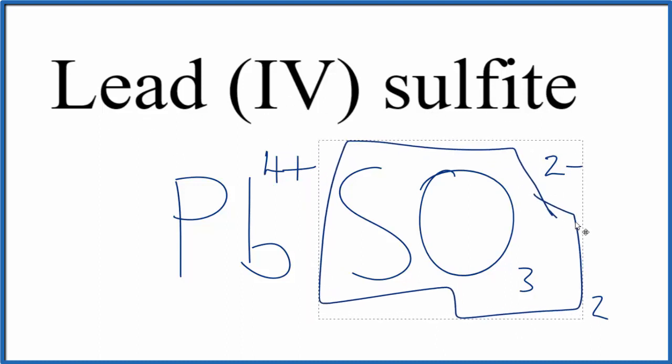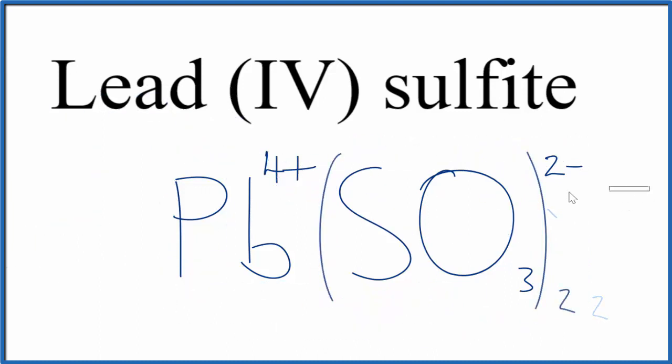We will need to replace this here with parentheses. Then we can remove these here. And this is the formula for lead four sulfite: Pb(SO3)2.